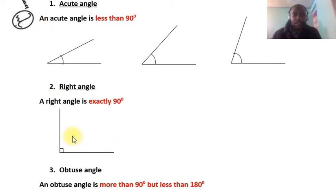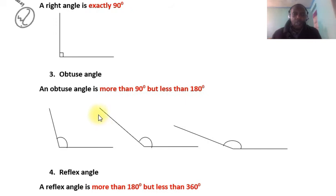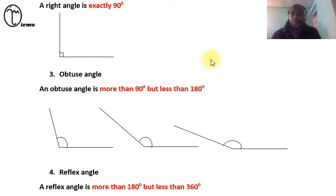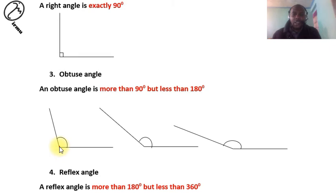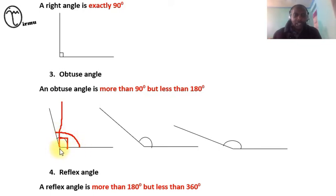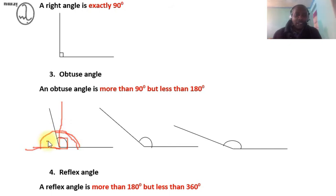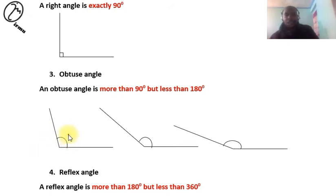The third type of angle — after acute and right angle — is referred to as an obtuse angle. An obtuse angle is more than 90 degrees but less than 180 degrees. A straight line has 180 degrees. These angles here are more than 90 and less than 180 — they have surpassed 90 degrees but have not reached 180 degrees, which is where a straight line is formed.